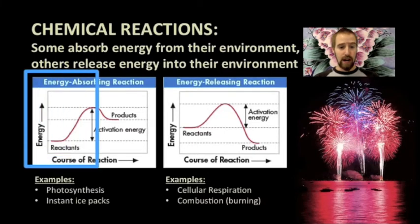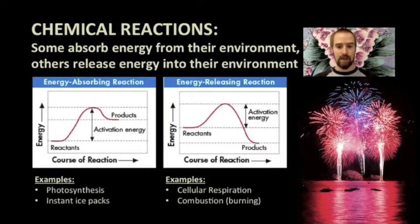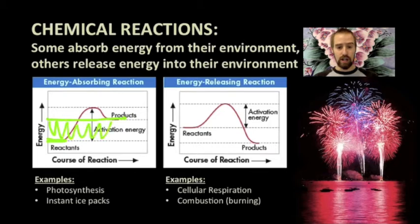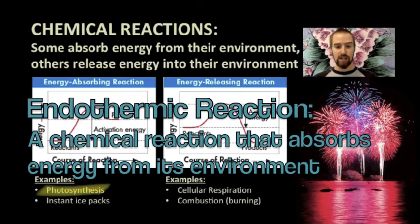In this first graph, we see the energy involved in an energy-absorbing reaction. The reactants we start with have very little energy on their own. The products on the other side of this hump have more energy. Since energy is always conserved, that means that the difference in energy between the reactants and products had to come from the environment in which this reaction was taking place. An example of this kind of reaction is photosynthesis.